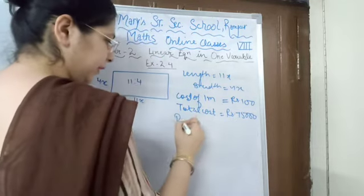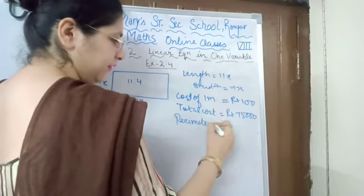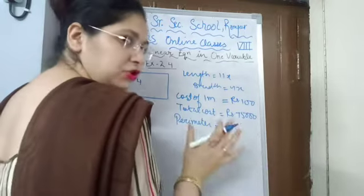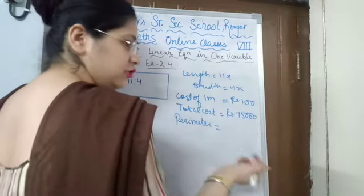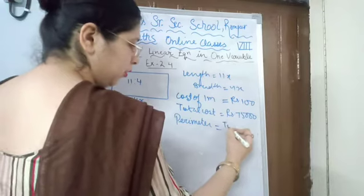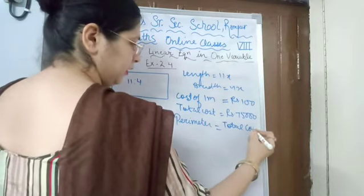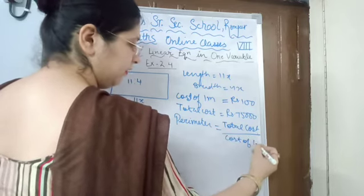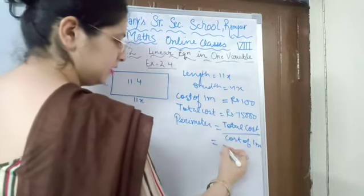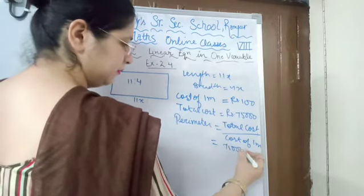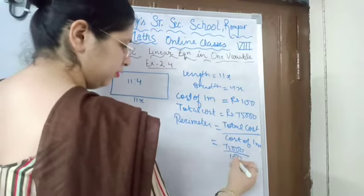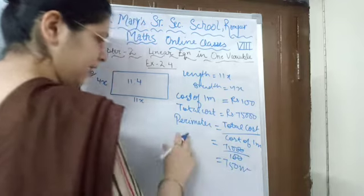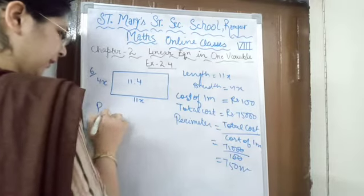We have to find the perimeter. If we find the perimeter, we can find the dimensions of this rectangular plot — the length and breadth. So perimeter equals total cost divided by cost of 1 meter: 75,000 divided by 100. The zeros cancel, giving us 750 meters. The perimeter is 750 meters.